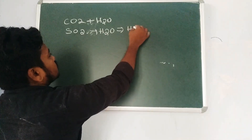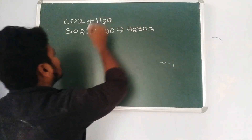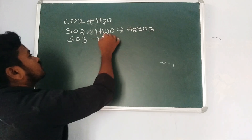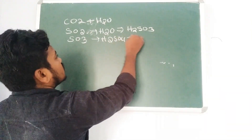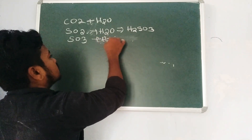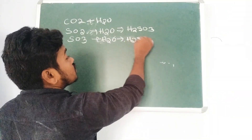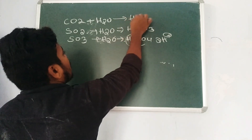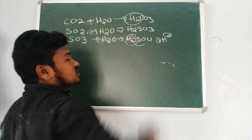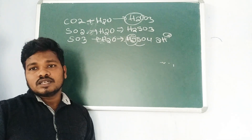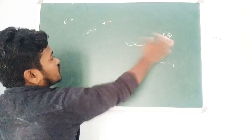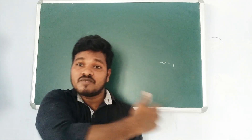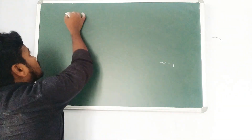Adding water: SO₂ + H₂O gives H₂SO₃, and SO₃ + H₂O gives H₂SO₄ which releases 2H⁺, so n-factor is 2. Similarly, CO₂ + H₂O gives H₂CO₃, which releases 2H⁺, so n-factor is 2. The key rule for acids: count how many H⁺ ions are given out — that is always the n-factor.